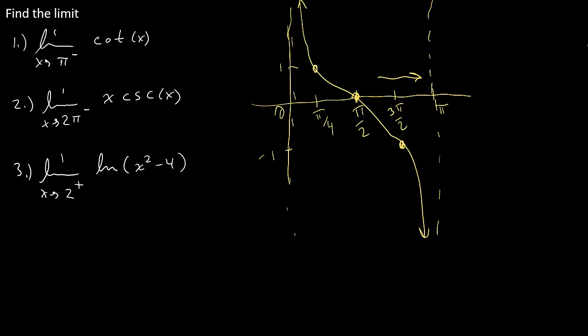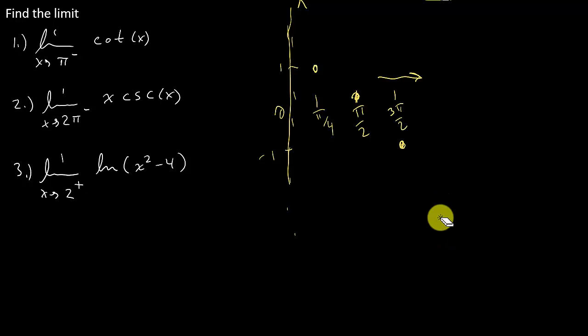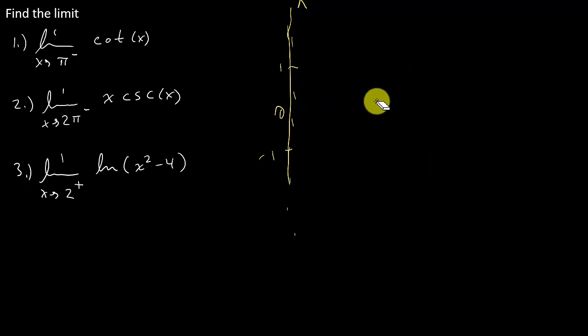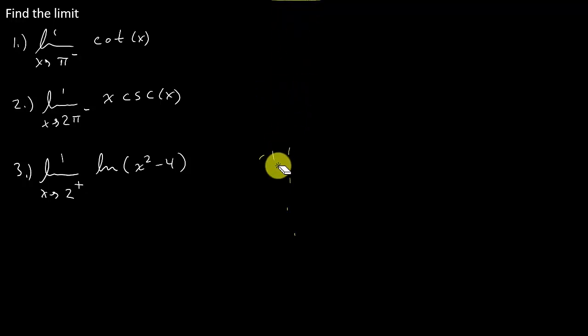And you know, that's great if you do that — it's acceptable. You can just sketch the graph. But what I want to do is look at it just a little bit different. Like I said, that way is fine if you can sketch cotangent real quick. But let's look at this another way.